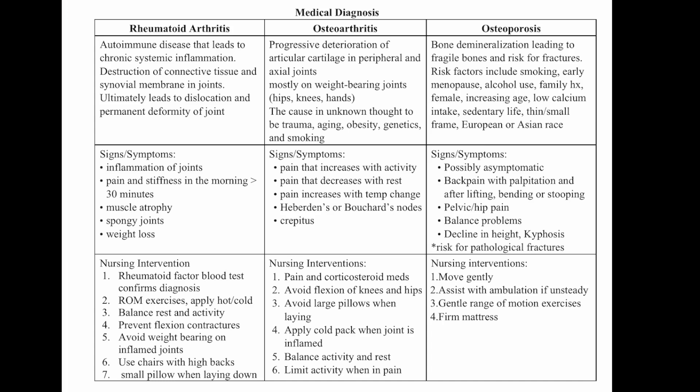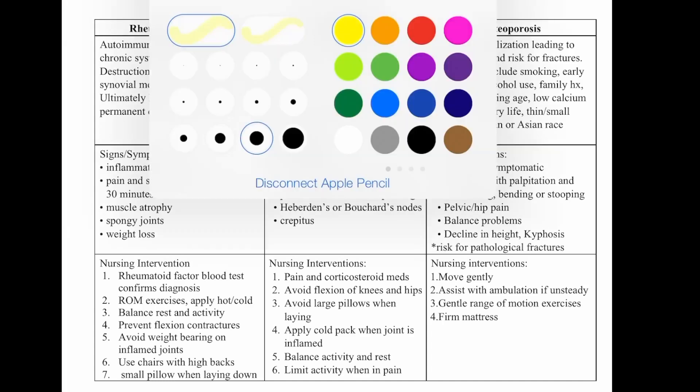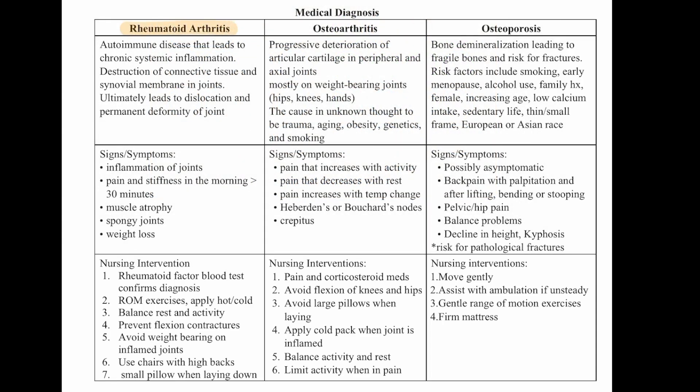Let's talk about medical diagnoses related to the musculoskeletal system. Rheumatoid arthritis is an autoimmune disease leading to chronic systemic inflammation, destruction of connective tissue and synovial membranes in the joints, ultimately leading to dislocation and permanent deformity. Signs and symptoms include inflammation of the joints, pain and stiffness in the morning greater than 30 minutes, muscle atrophy, spongy joints, and weight loss. Nursing interventions: rheumatoid factor blood test to confirm diagnosis, range of motion exercises using hot and cold, rest and activity balance, prevent flexion contractures, avoid weight-bearing on inflamed joints, use a chair with a high back, and a small pillow when lying down.